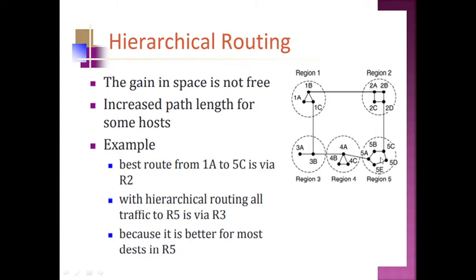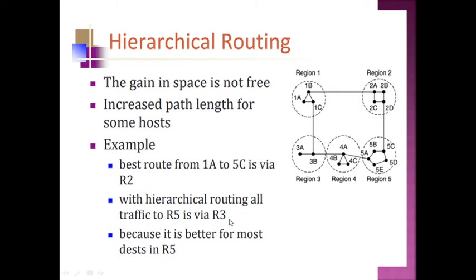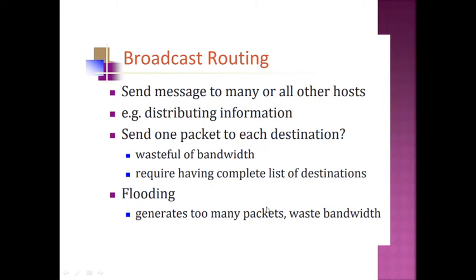For example, the best route from 1A to 5C is via router 2. To reach region 5 from region 1, the best route is region 1 to region 2, then to region 5. However, with hierarchical routing, all traffic to region 5 goes via region 3 — through 1C. This means it reaches region 5 via router 3, which is better for most destinations in region 5. So this path is chosen because it is optimal for most of those routers.